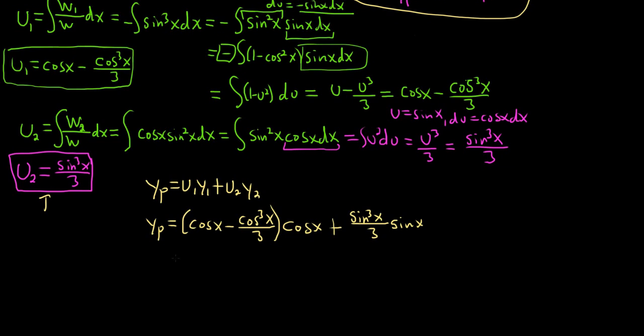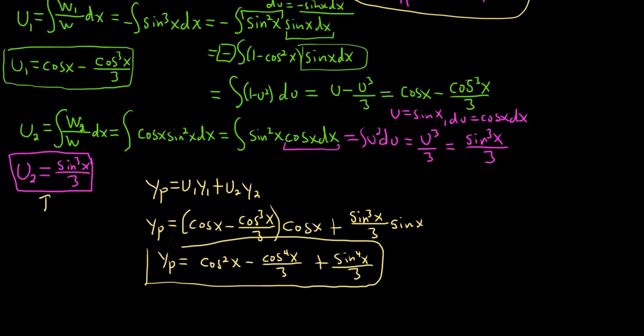We should probably distribute this. So let's distribute. So y sub p will be cosine squared x minus cosine to the fourth of x over 3 plus sine to the fourth of x over 3. We're going to say, some identities. Yes. Yes, there are things you can do here, right? You can factor out a 1 third. You can do sine to the fourth minus cosine to the fourth. That's like the difference of squares. Then you can use an identity. There's all kinds of stuff you can do. But we're just going to stop here. So it's not necessary.